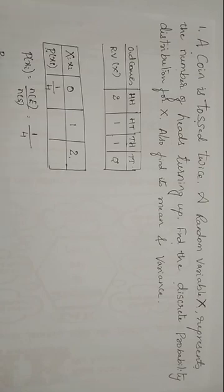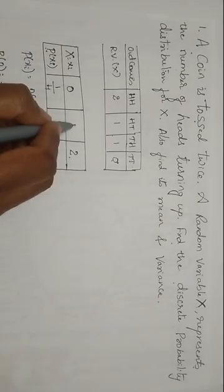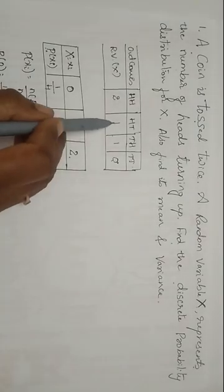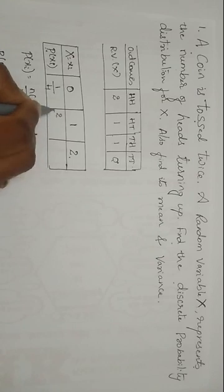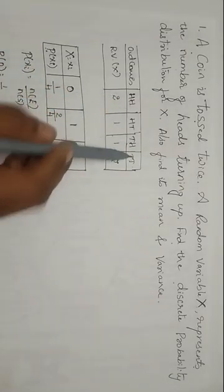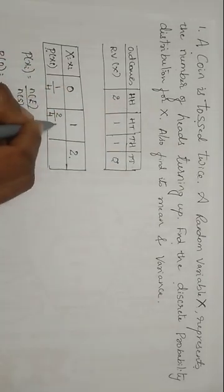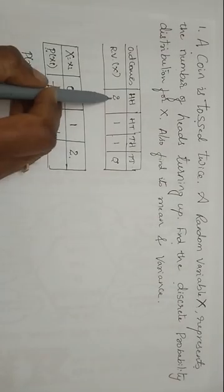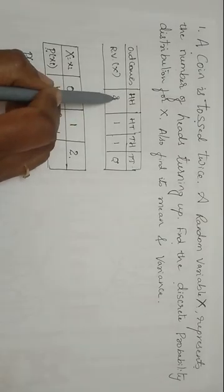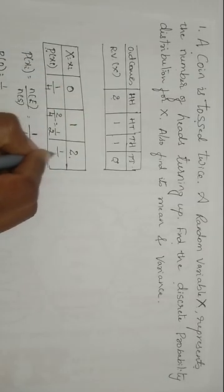Even you can write it as P of 0 is equal to 1 by 4. Similarly, for X is equal to 1. How many times the 1 has been repeated? 2 times. 2 divided by total number of elements in the sample space is 4. If you want, you can simplify. It is equal to 1 by 2. And the number 2, the random variable 2, it's there only once. So it is 1 divided by 4.